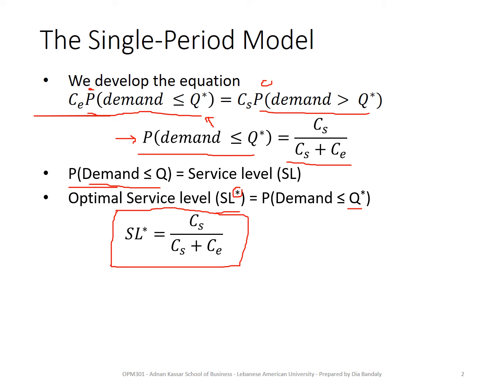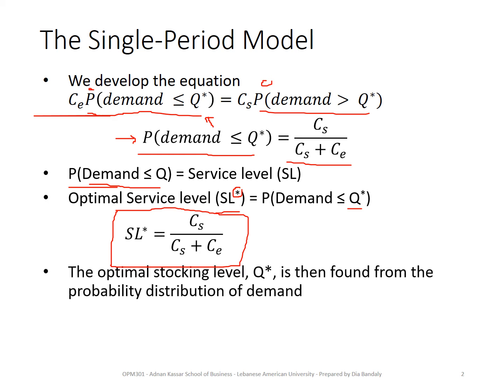The optimal service level is the probability that demand is less than the inventory on hand when that inventory is Q star. Now I can rewrite the equation in terms of service level: my optimal service level equals CS over CS plus CE. Based on given unit shortage and unit excess costs, I can find my optimal service level. Our objective is then to find Q star from this now-known optimal service level, and it depends on the probability distribution of demand. I'll show you two cases: when demand has a normal distribution, and when demand has a discrete probability distribution.